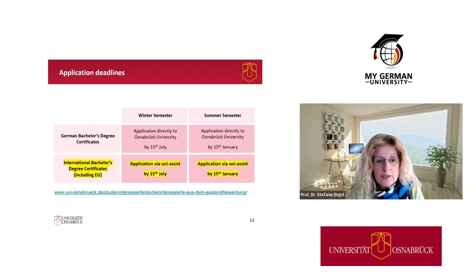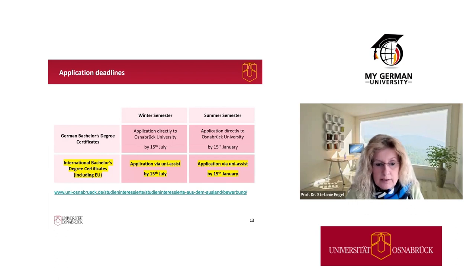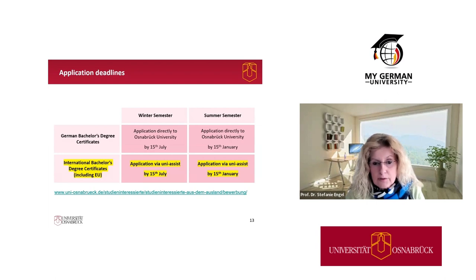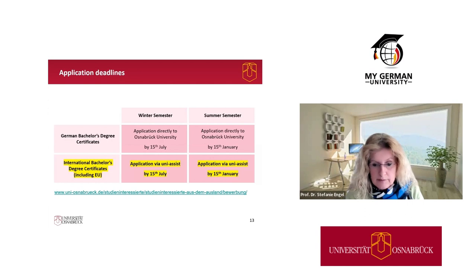Regarding application deadlines: students with an international bachelor's degree — including from other EU countries — must apply via uni-assist. The application deadline for the winter semester is July 15th, and for the summer semester it is January 15th.